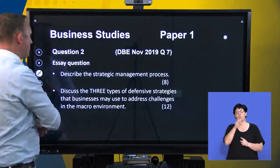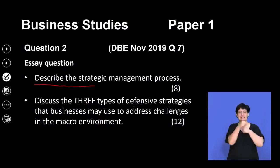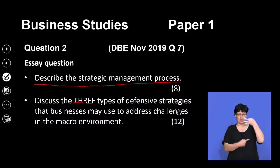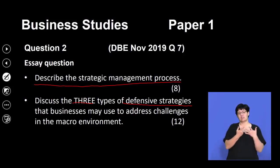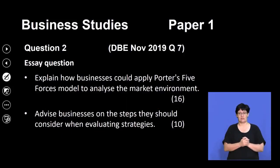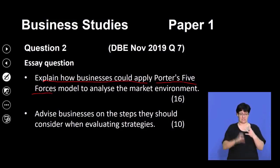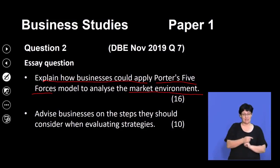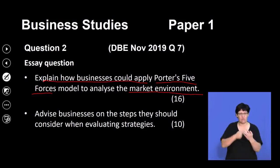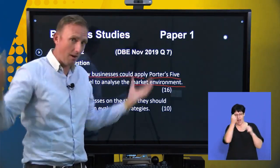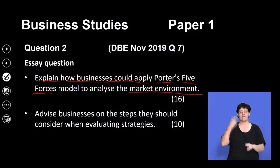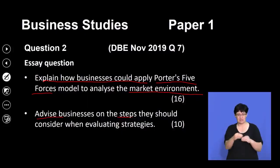The first question is: describe the strategic management process. The next question: discuss three types of defensive strategies that a business may use to address challenges in the macro environment. Then: explain how businesses could apply Porter's Five Forces to analyse the market environment. You can see the questions already mention macro environment and market environment, so we have to make sure we get our head around the different business environments. The final question: advise the business on the steps they should consider when evaluating strategies.